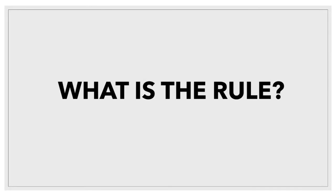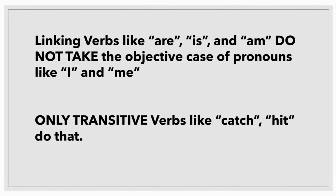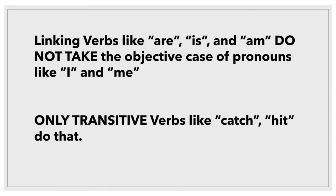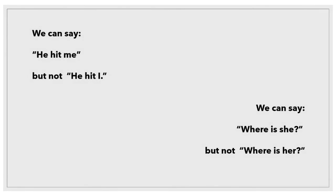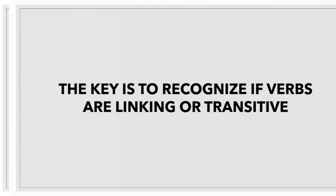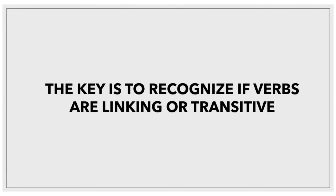How did that happen? What is the rule? Linking verbs like are, is, and am do not take the objective case of pronouns like I and me. Only transitive verbs like catch and hit do that. So we can say 'he hit me,' but not 'he hit I.' And you can say 'where is she,' but not 'where is her?'